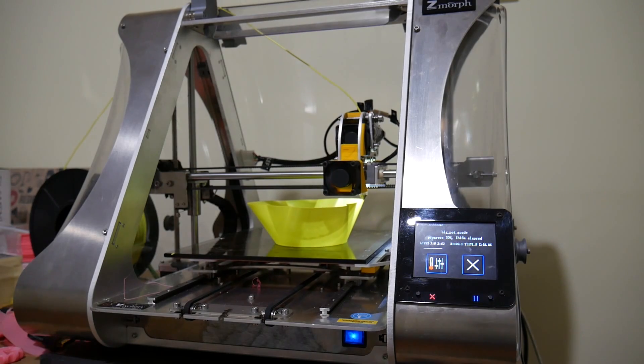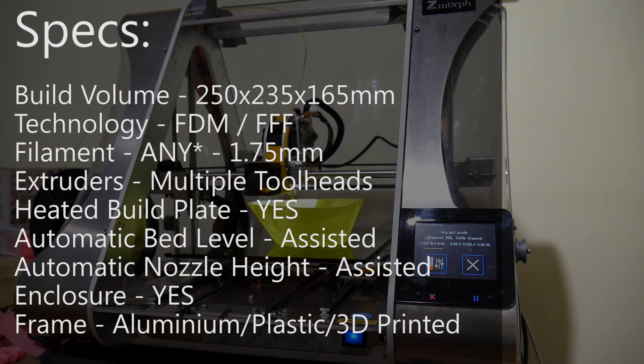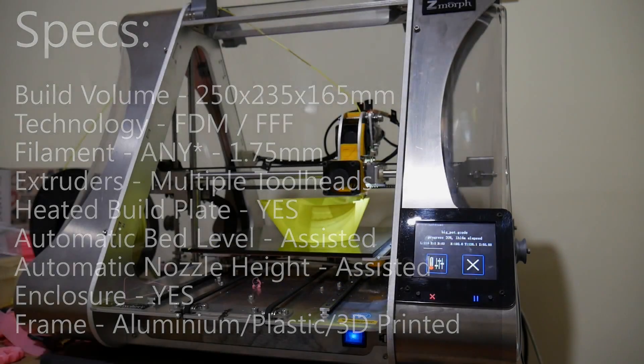So this is the Z-Morph 2.0 SX from Poland and it's built like an absolute tank. Made from a triangulated frame of laser-cut aluminum, vacuum-formed PET and 3D printed components, this machine is rigid. Probably the most rigid machine I've ever tested. But I can't really demonstrate that because if I shake it, the whole table will shake rather than the machine. It's absolutely insanely overbuilt.